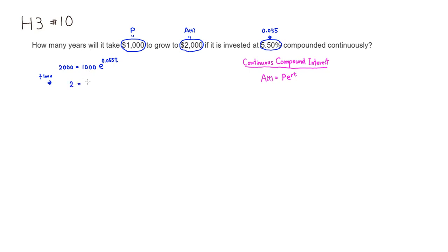So 2,000 divided by 1,000 is 2. Then 1,000 cancel out. So you have e to the 0.055t. Now we have to get rid of e. So easiest way would be take the natural log of both sides. So you have natural log of 2